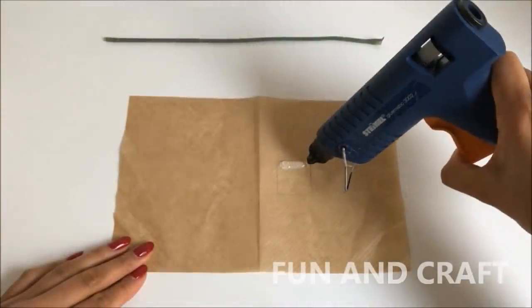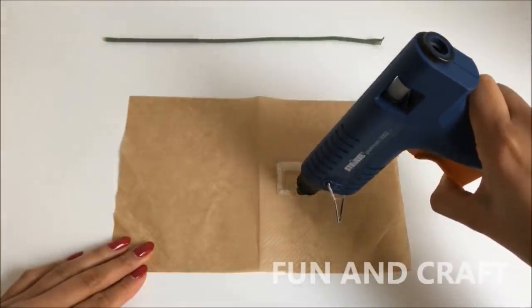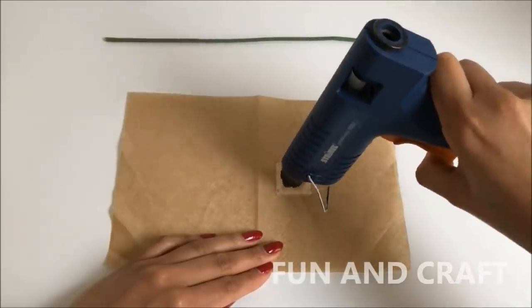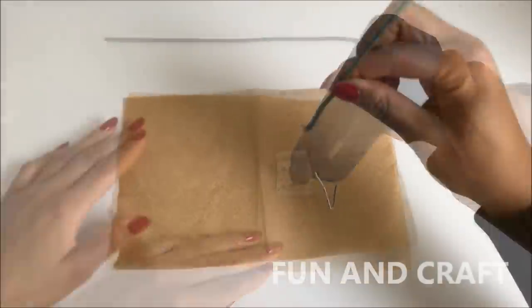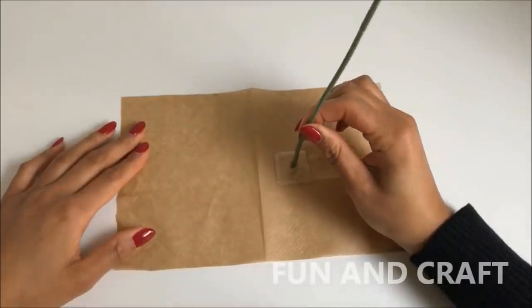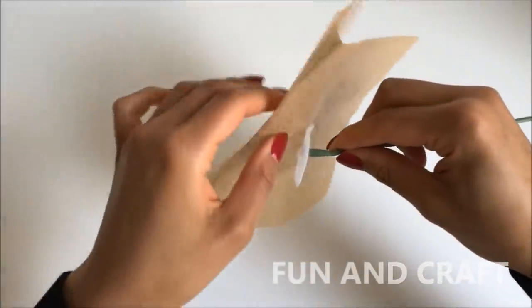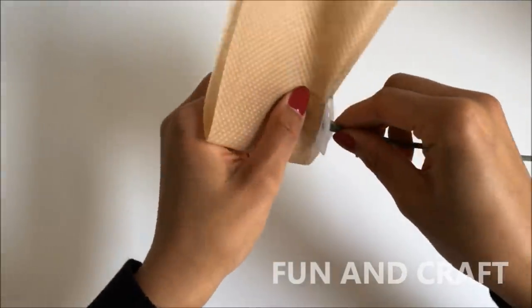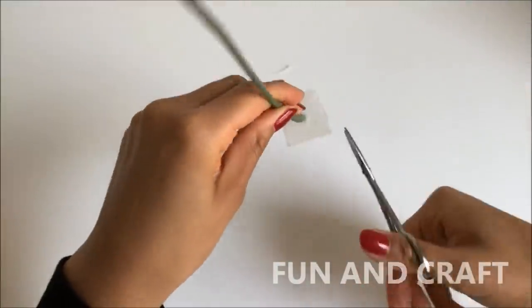Apply hot glue to a piece of baking paper. Try to shape it like a square. Now place the stem in the middle and hold it until the hot glue has dried. I am using baking paper because you can easily remove it. Tidy up the edges and bend the stem in the desired shape.